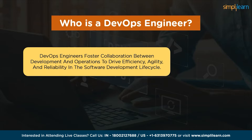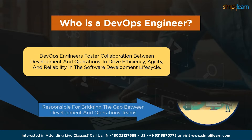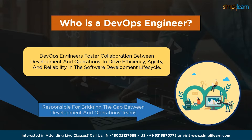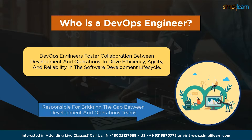Now the question is: who is a DevOps engineer? A DevOps engineer is a professional who combines software development expertise with operations knowledge to facilitate collaboration, streamline processes and improve software delivery and infrastructure management within an organization. A DevOps engineer's role is to bridge the gap between development and operations teams, enabling efficient and reliable software development and deployment practices.